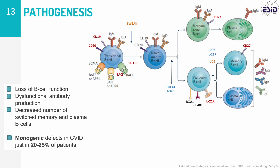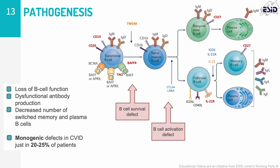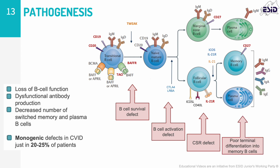A monogenetic defect is identified in around 20% of patients; however, this may rise with increased interest and access to genetic testing. Genes identified as monogenetic causes of CVID are classified as B-cell survival defects, activation defects, class-switch recombination defects, or poor terminal differentiation of memory cells or plasma cells.